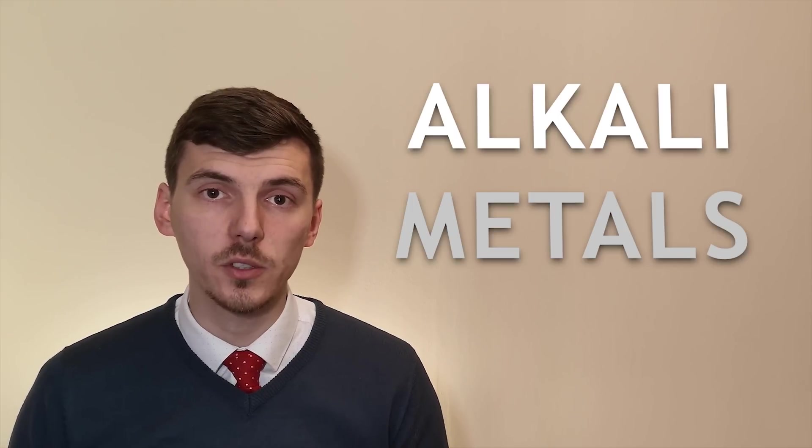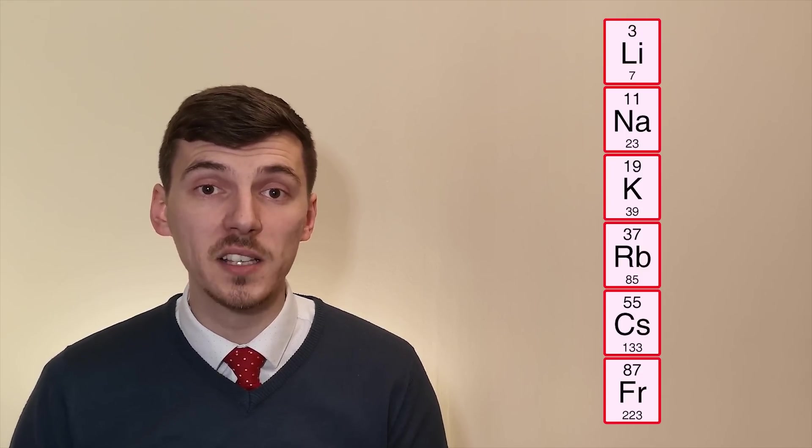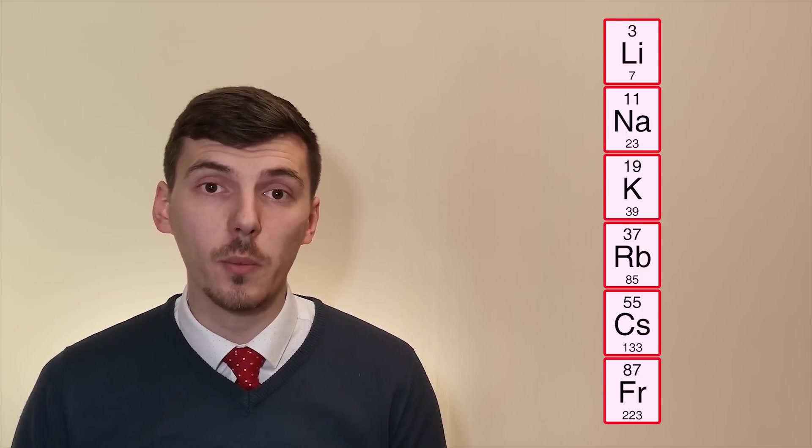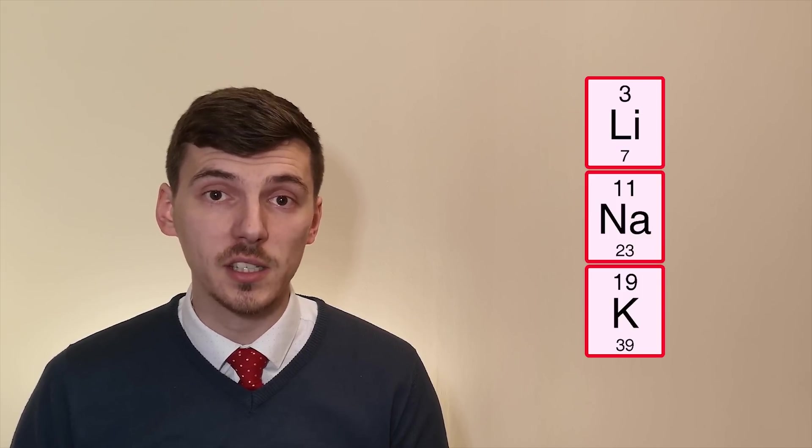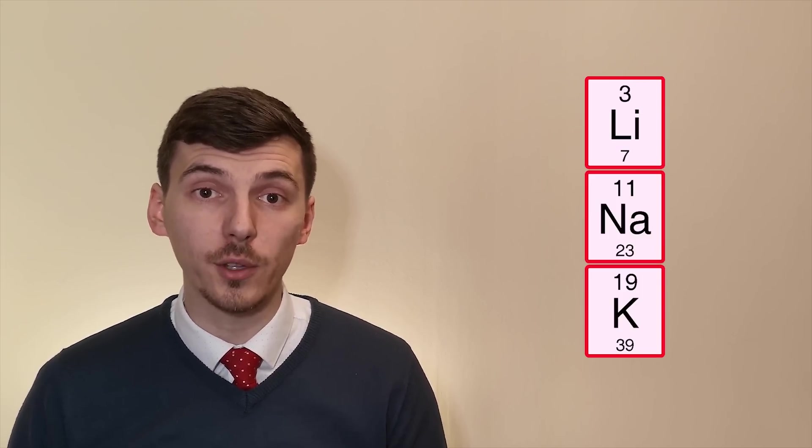The group 1 metals are often referred to as the alkali metals. These metals include lithium, sodium, potassium, rubidium, cesium and francium. You only need to know about the properties of lithium, sodium and potassium and you need to be able to predict the properties of those further down the group.